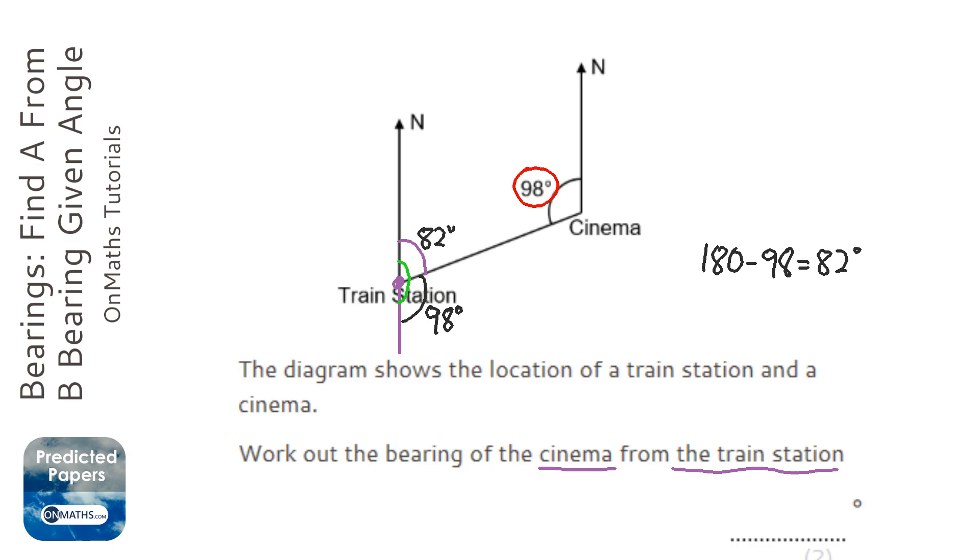So that's 82 degrees there, which is the bearing. But the most important thing we realize with bearings, no actually it's not that important, however you could lose marks if you don't do it, is they have to be three figures. So we have to put a zero before that if it's less than 100, so it's 082 degrees.